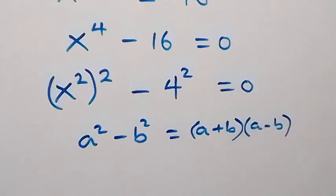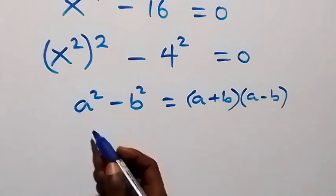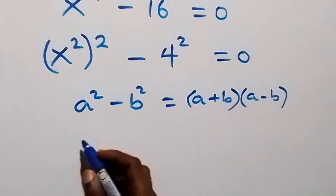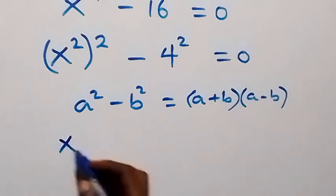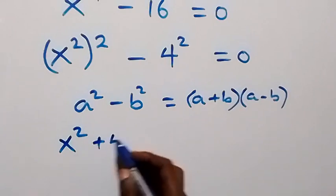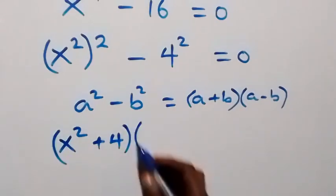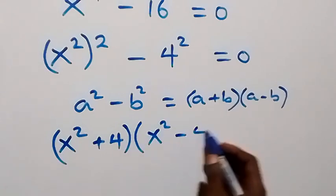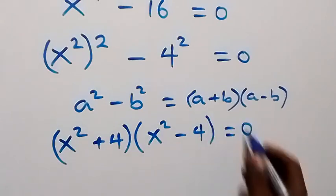Here we have x squared serving as a and 4 serving as b. So this can now be written as x squared plus 4, multiplied by x squared minus 4, which equals zero.